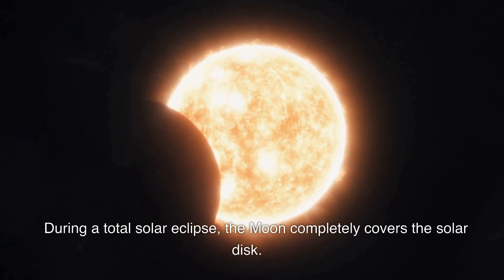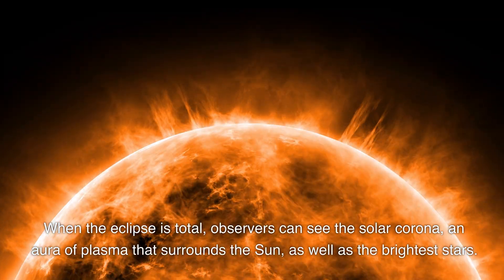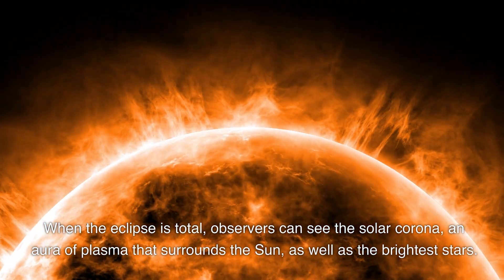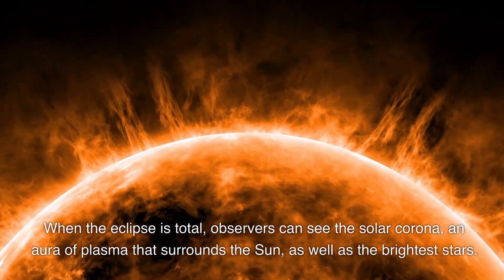During a total solar eclipse, the moon completely covers the solar disk. This occurs when the moon is at an optimal distance from the earth and its angular diameter is large enough to completely cover the sun. When the eclipse is total, observers can see the solar corona, an aura of plasma that surrounds the sun, as well as the brightest stars.